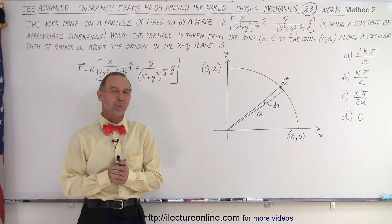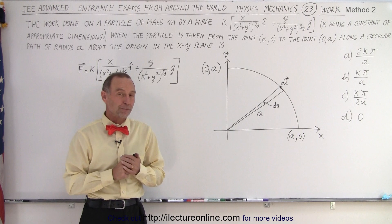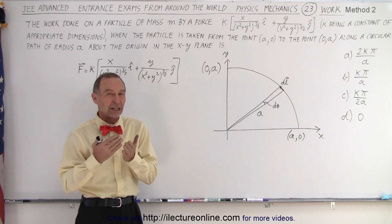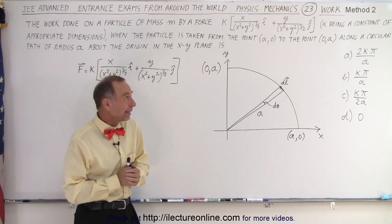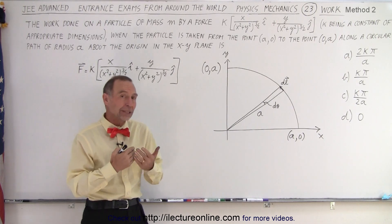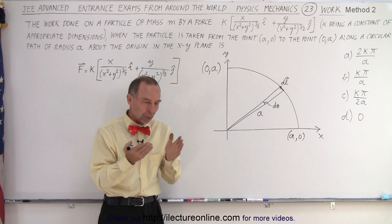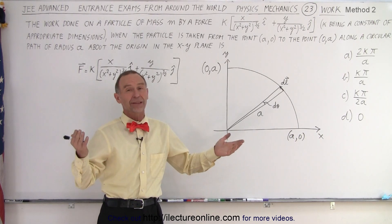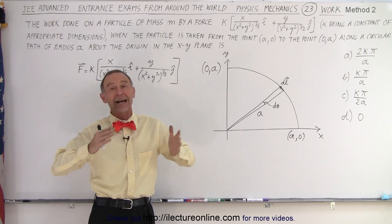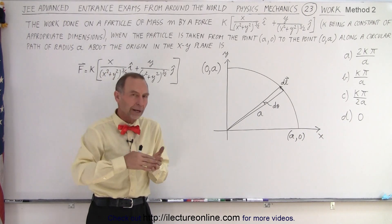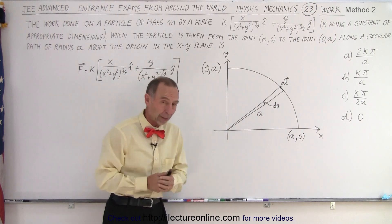Welcome to our lecture online. We solved this problem on the previous video, but we went through the trouble of finding an expression for dl in terms of the x and y components, then we did a dot product with a force, and then we looked at the integral and realized that the integral had two components that were opposite in sign but exactly the same, so when we integrated it we'd get zero — the answer for this problem would be zero.